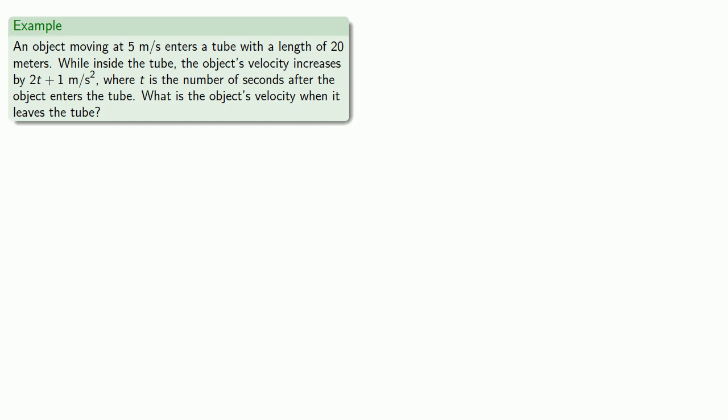V of t, our velocity, is going to be measured in meters per second. And a of t, our acceleration, is going to be measured in meters per second squared. And so that tells me that v of t is an antiderivative of a of t.